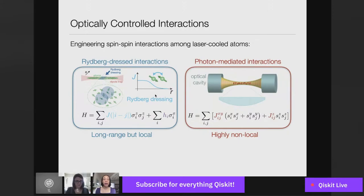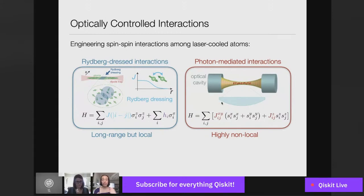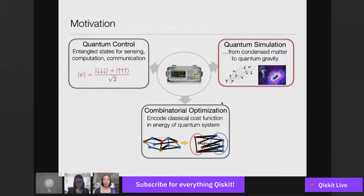Now I'll switch gears and tell you about a second platform. One potential limitation in the Rydberg system is that the interactions necessarily decay with distance, which gives some limitations on the type of interaction graphs you can realize. There are a number of reasons why you might like to have even more control over the structure of interactions and not be restricted to spatially local ones. There's a second platform we work on in my lab where photons convey information between distant spins. That is relevant for a number of the different spheres of application I mentioned earlier.